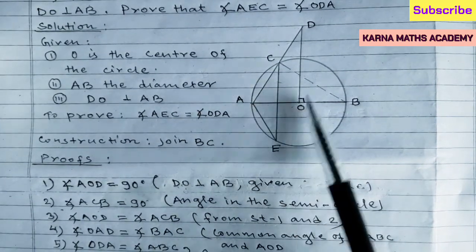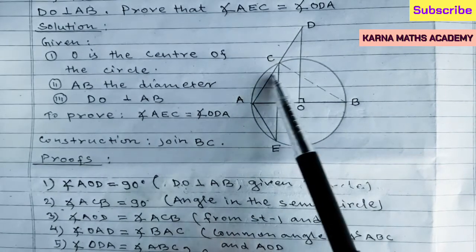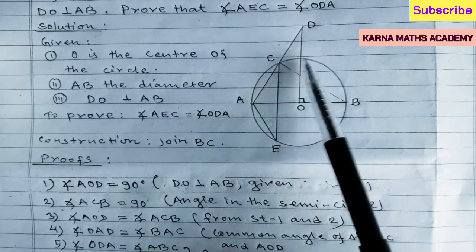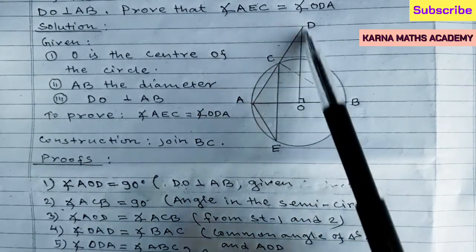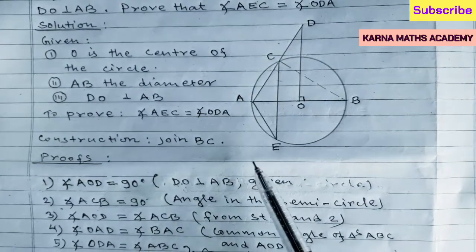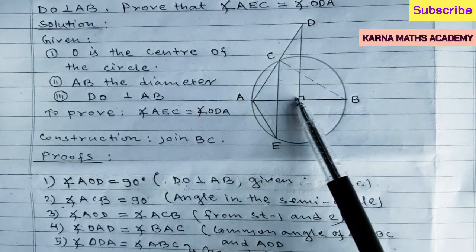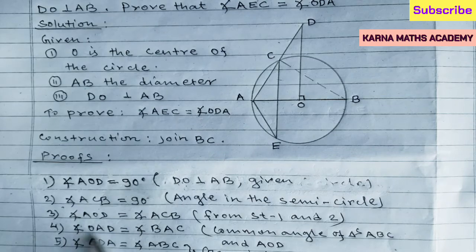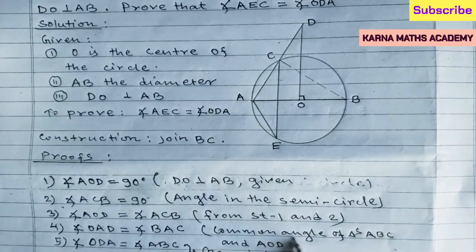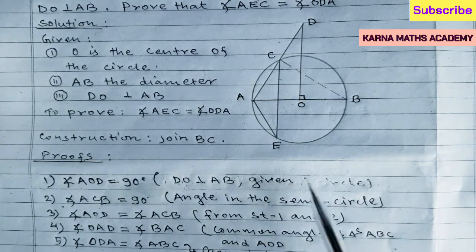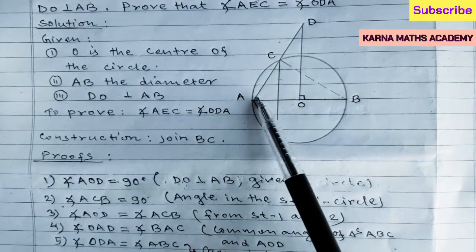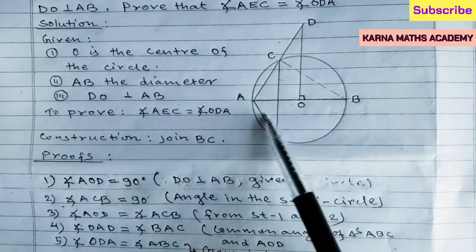Dear students, in triangle AOD and triangle ABC, we have found that angle ACB equals angle AOD. Now we can take angle OAD of triangle AOD and angle BAC of triangle ABC — they are common angles of triangles ABC and AOD, so angle BAC equals angle OAD.